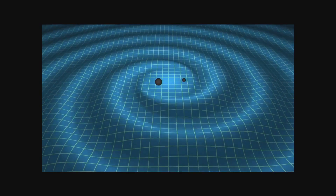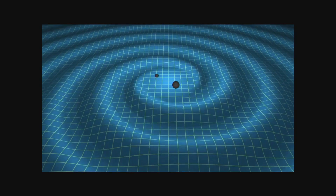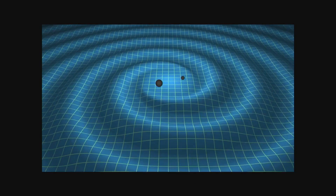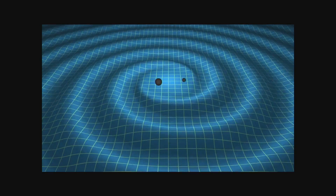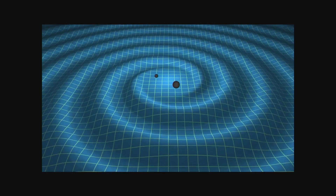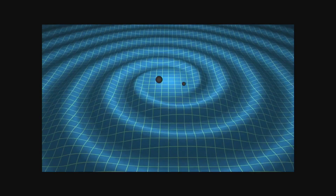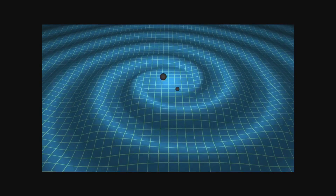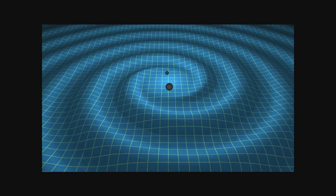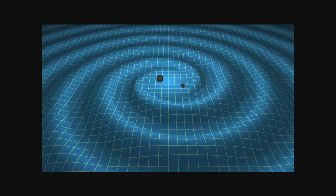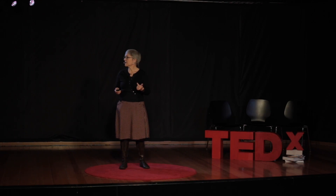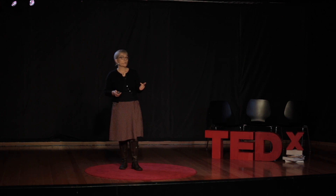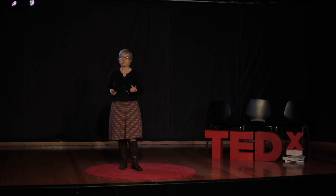Now, when masses move, ripples in the space-time curvature are generated and propagate through space. It's a bit like those ripples on the lake, but on a much larger scale, and what vibrates is space itself. And those space-time vibrations are what we call gravitational waves, or GWs for short.